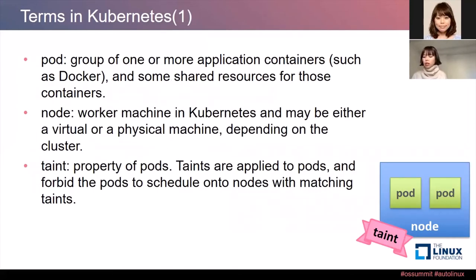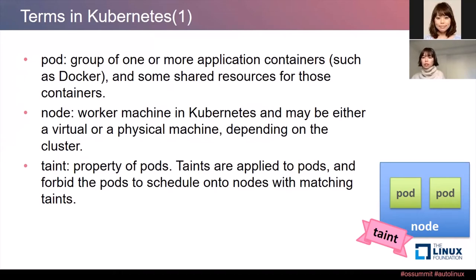I would like to introduce some terms in Kubernetes. First, Pod — a Pod is a group of one or more application containers and some shared resources for those containers. Then, Node — a Node is a worker machine in Kubernetes, and may be either a virtual or physical machine, depending on the cluster. And then, Taint — Taint is a property of Pods. Taints are applied to Pods and forbid the Pods from scheduling onto nodes with matching taints.